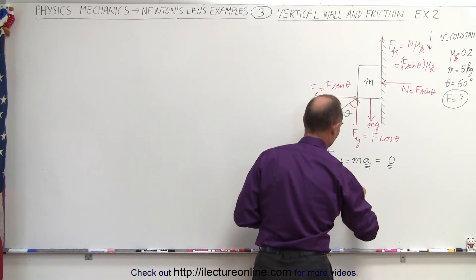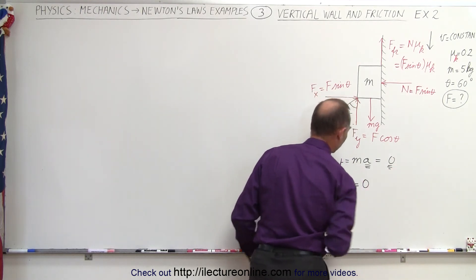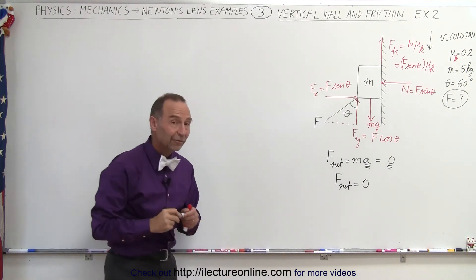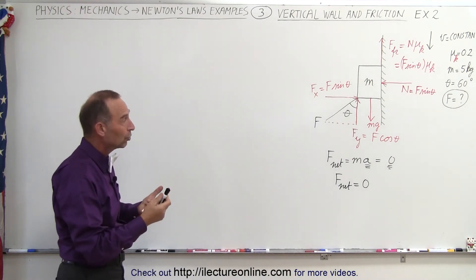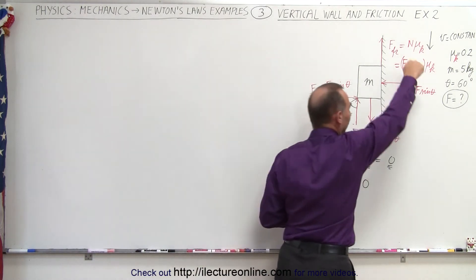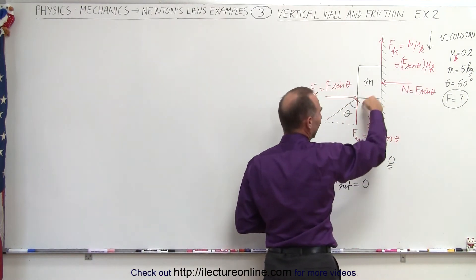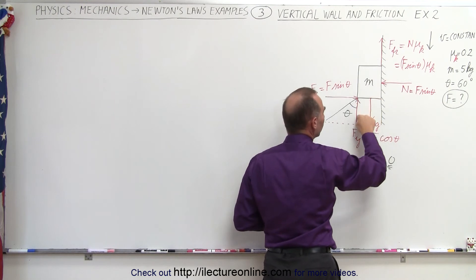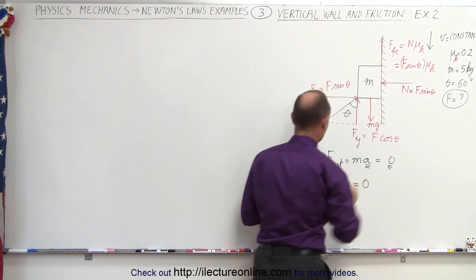Now we're going to identify all the forces aiding the motion and all the forces opposing the motion. Since the motion is now downward, the only force that's aiding the motion is the weight. The two other forces are opposing that motion.